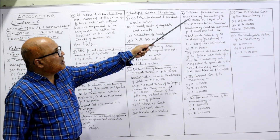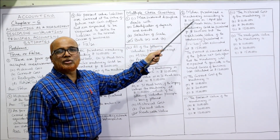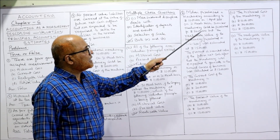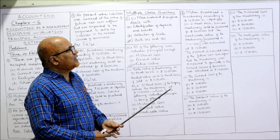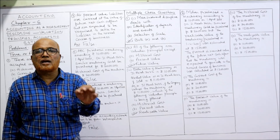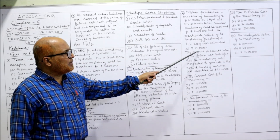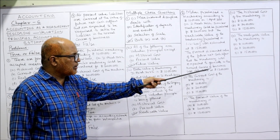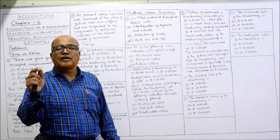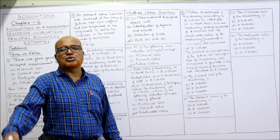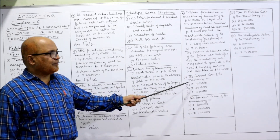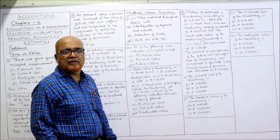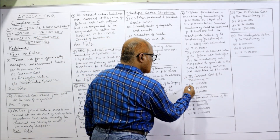Next: Mohan purchased machinery for Rs. 10 lakh on 1st April 2001 — this is the historical cost. On 31st March 2022, similar machinery could be purchased for Rs. 20 lakh — this is the current cost. The realizable value of the machinery was estimated to be Rs. 15 lakh. The present discounted value of future net cash inflows the machinery was expected to generate in the normal course of business was calculated as Rs. 12 lakh — this is the present value. The current cost of the machine is Rs. 20 lakh.